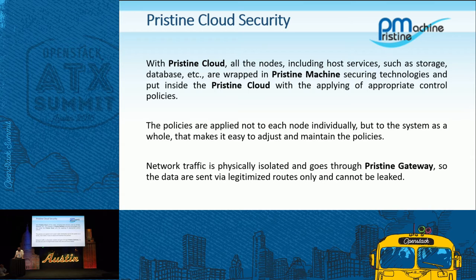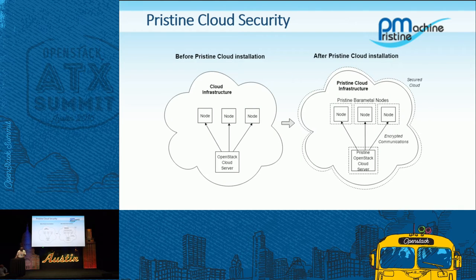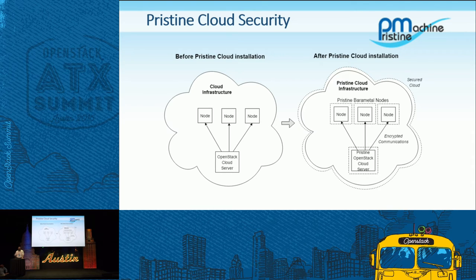If we look at the types of policies, let's look at how we are actually doing it on a picture. On the picture, we have an OpenStack cloud. After the install, around every node of the OpenStack, we have a thin layer. It is our Pristine OS, but to the admin of the cloud, it is just still the same OpenStack cloud.